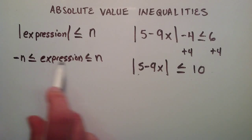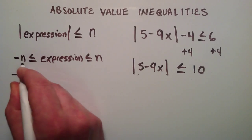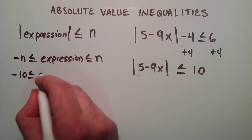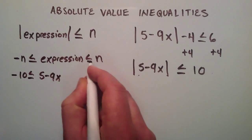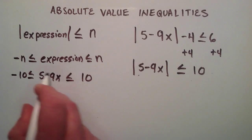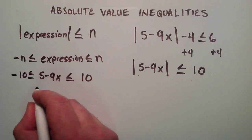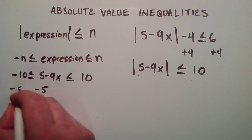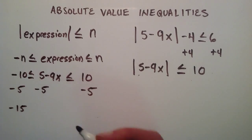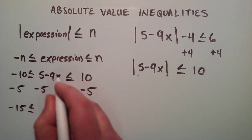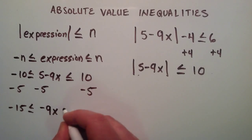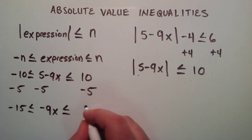So let's go ahead and start our solution. We can start by writing negative n, or in our case negative 10, is less than or equal to our expression 5 minus 9x, and that's less than or equal to n, which is 10. Now we want to get x by itself in the middle, so we're going to subtract 5 from each of these parts. Negative 10 minus 5 gives us negative 15, the positive 5 and negative 5 cancel to leave negative 9x in the middle, and 10 minus 5 is 5.